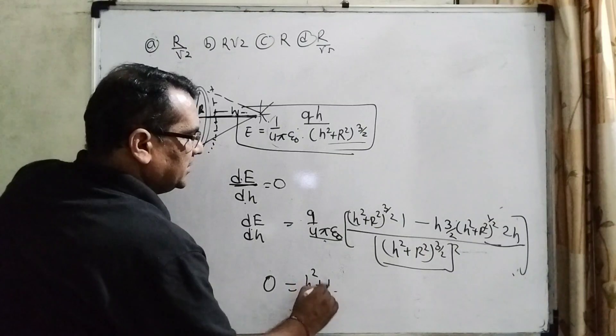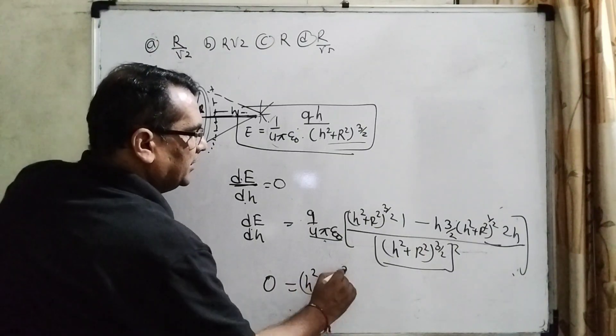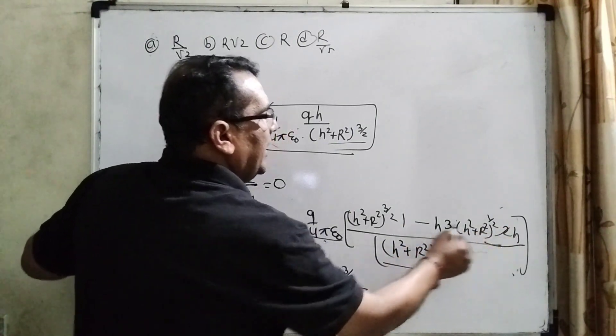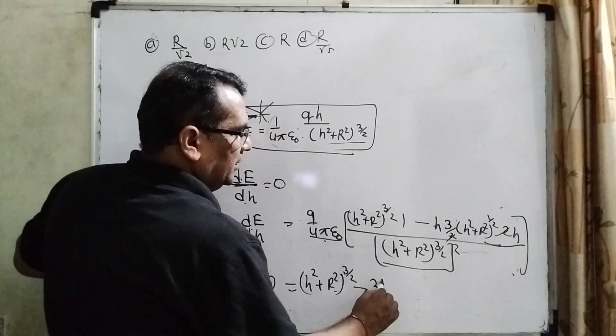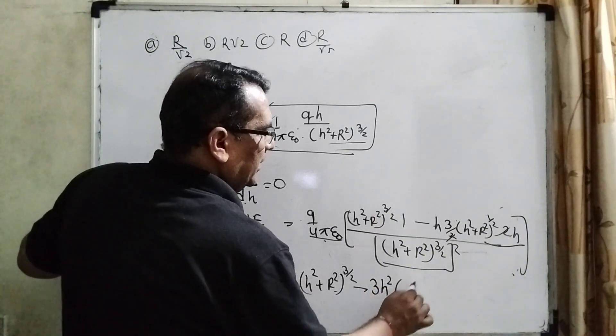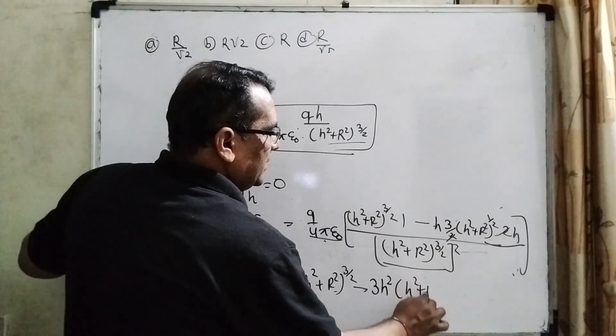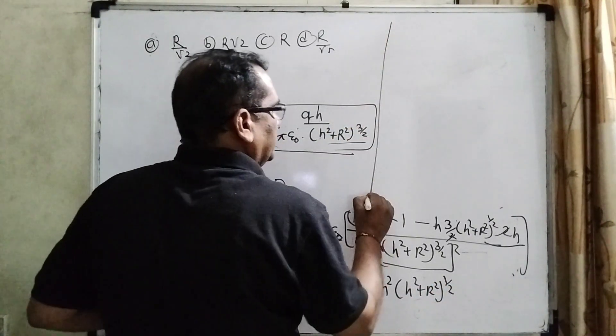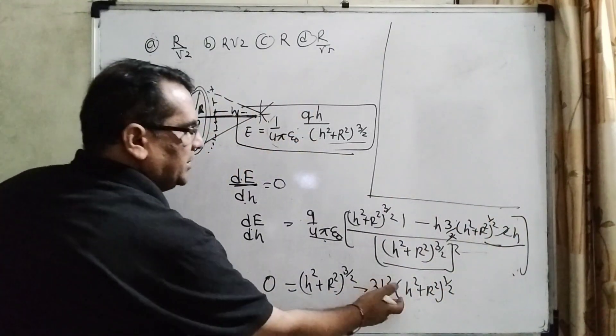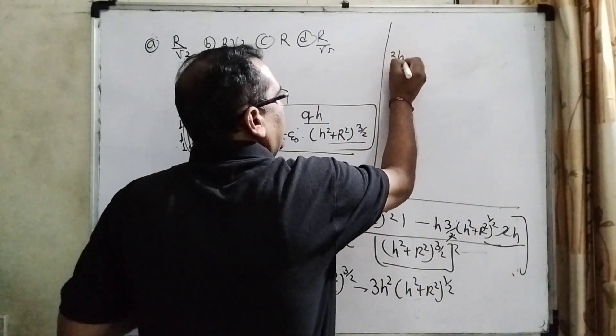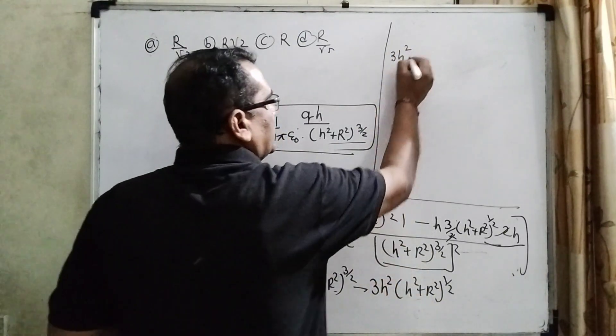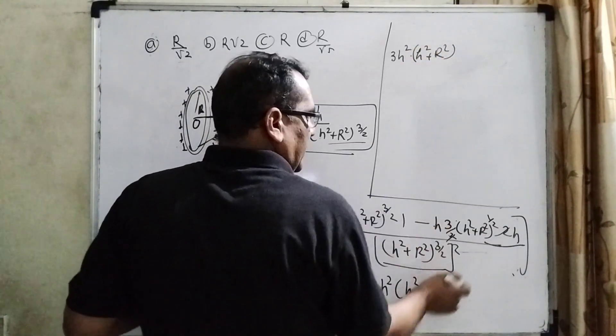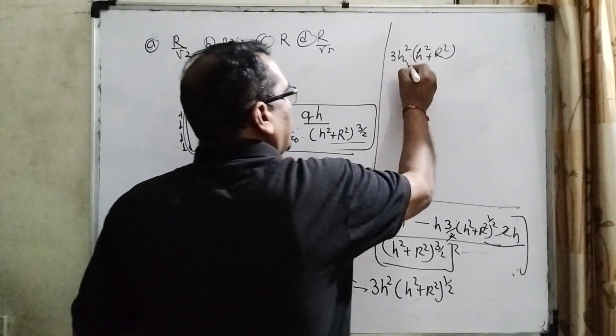Okay. (h² + R²) raised to power 3/2 minus, this 2 and this 2 cancel out, h times h is h². 3h² and (h² + R²) raised to power 1/2. Okay. Now, transposing this term to the left side becomes positive: 3h² (h² + R²). h² + R² can be written in the form of root, because 1/2 power, you are well known, is root.